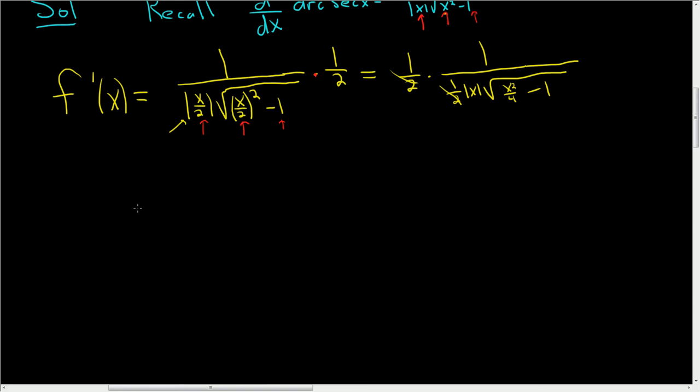So this equals 1 over the absolute value of x. And then here, let's write x squared over 4 minus 1 as follows: x squared over 4 minus 4 over 4. You can write 1 as 4/4 and then write it like this. So this will be (x squared minus 4) over 4.